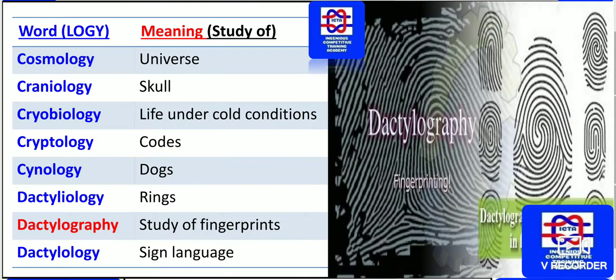The study of dogs is known as cynology. The study of rings is known as dactylology — you will find tree rings, and the study of rings is dactylology. Please go through the internet where you will find tree rings referred to as dactylology.